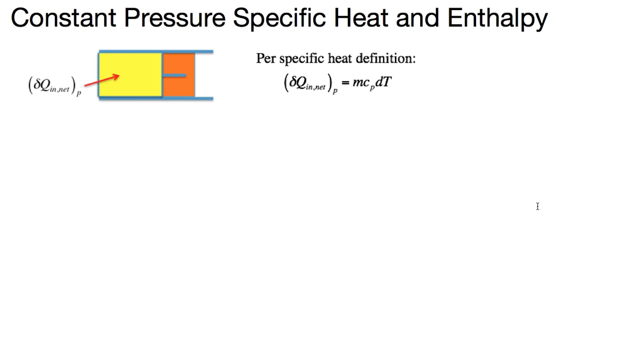Now, how do we relate the delta-q net, this amount of heat added into the system, with the property of the system? Let's look at the energy balance equation of the system.